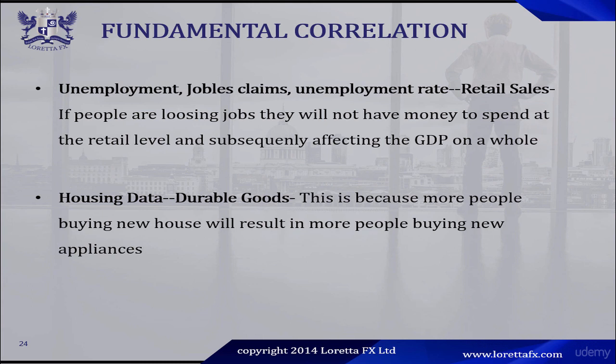Housing data and durable goods are correlated. This is simply because more people buying new houses will result in more people buying new appliances. So if we have better than expected housing sales, this should result in good durable goods data. As a fundamental trader, you can pay attention to housing sales and then use the housing data to trade the durable goods data. We're going to go to fxstreet.com to take a closer look at the correlation between housing data and durable goods.